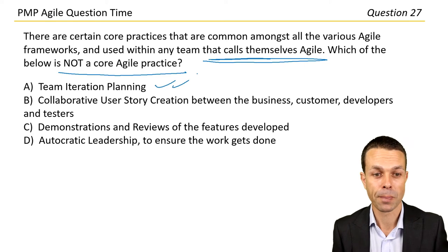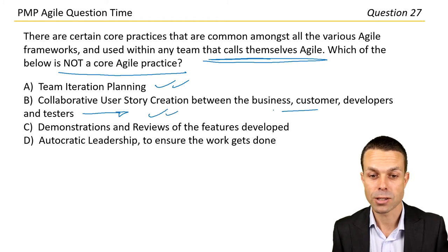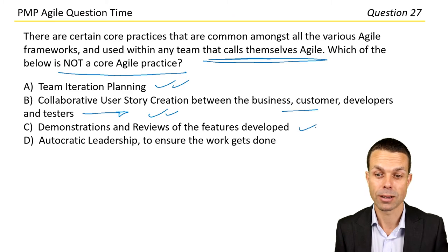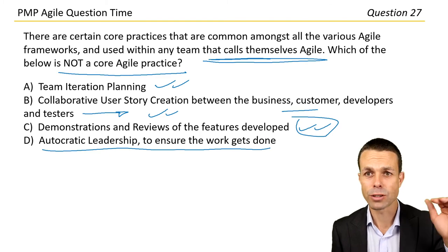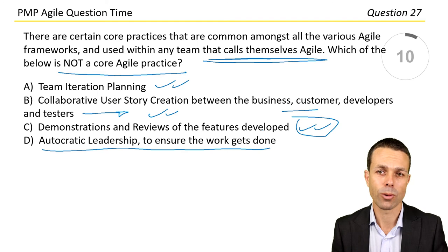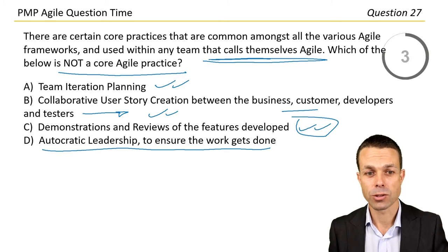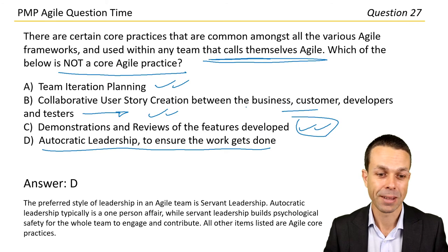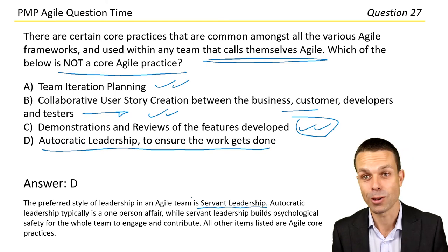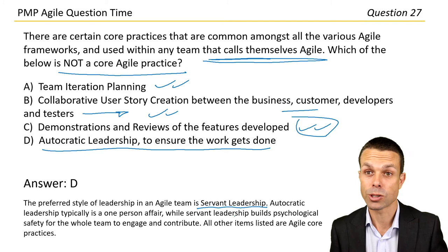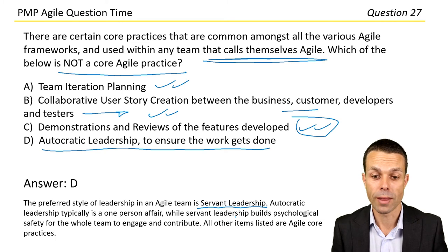The options are: team iteration planning; collaborative user story creation between the business, customer, developers and testers; demonstrations and reviews of the features; and autocratic leadership to ensure the work gets done. Autocratic leadership is more of a top-down leadership style, which is definitely not the agile way — agile is more bottom-up with the team working together.